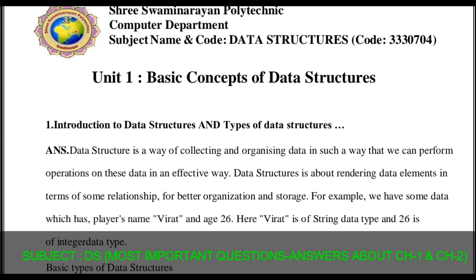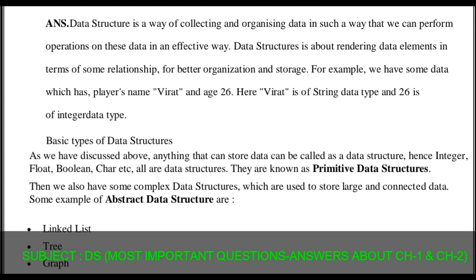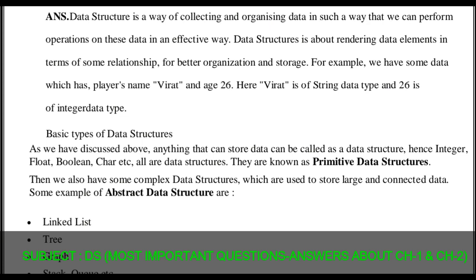The basic types of data structure: anything that can store data can be called a data structure. Hence integer, float, boolean, character, etc. are known as data types, and all of these are data structures. They are known as primitive data structures. Once again, data types such as integer, float, boolean, and character are all called primitive data structures.